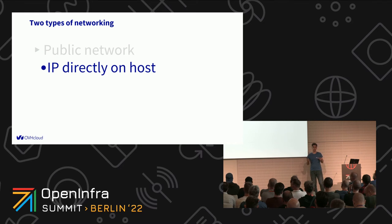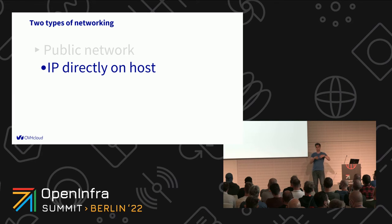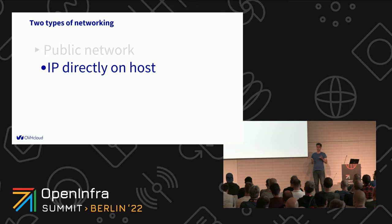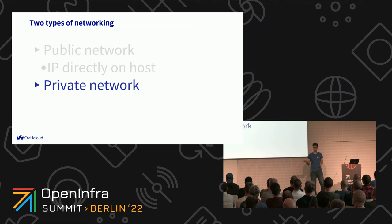For this public network, there is one particular feature that was kind of hard to then implement in the OpenStack world: that is IP directly on the host. So when someone is ordering a server and on the manager's side sees that a given IP is being assigned to their physical server, then when they SSH into that server, they also see this IP on one of their interfaces. And of course, next to public networking, we provided private networking.